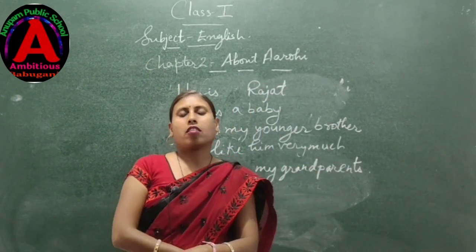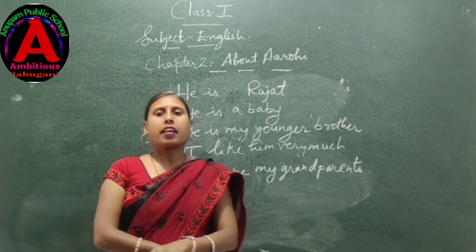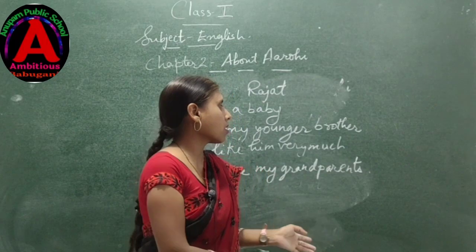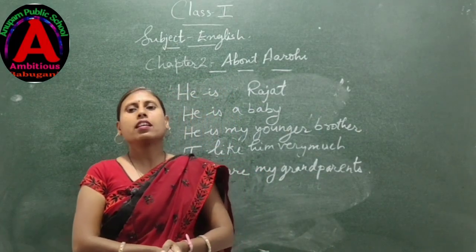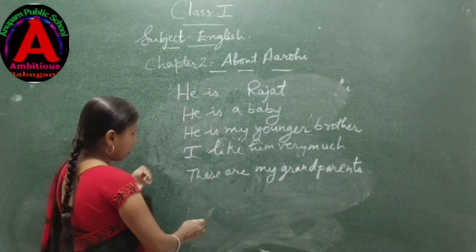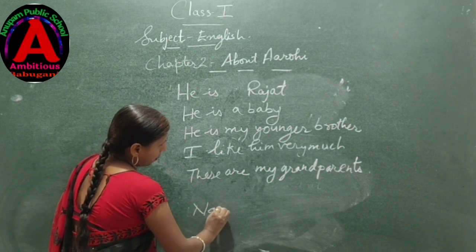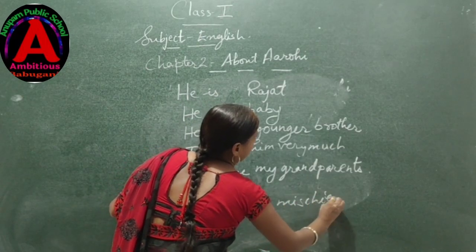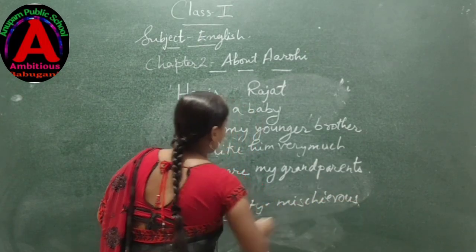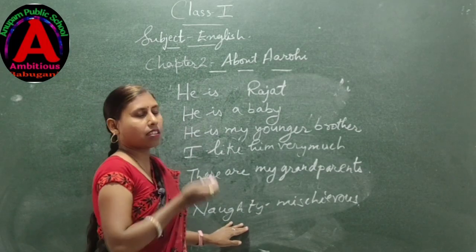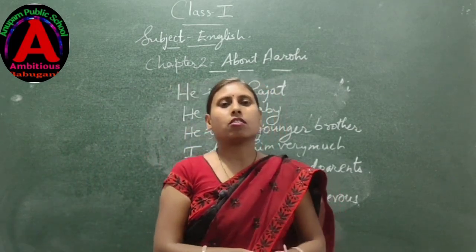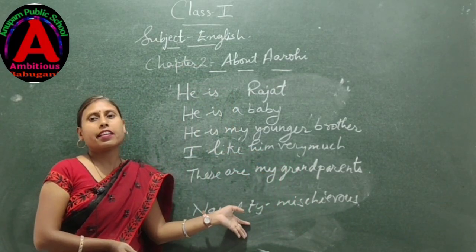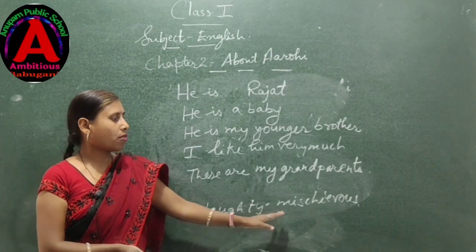Next: I have a dog. Its name is Rocket. Arohi has a dog and the dog's name is Rocket. It is very naughty. Naughty means mischievous. So Arohi's dog Rocket is very mischievous.